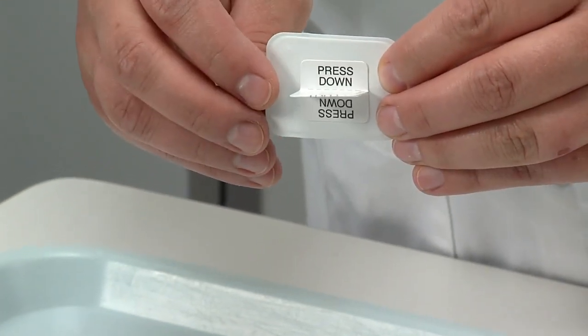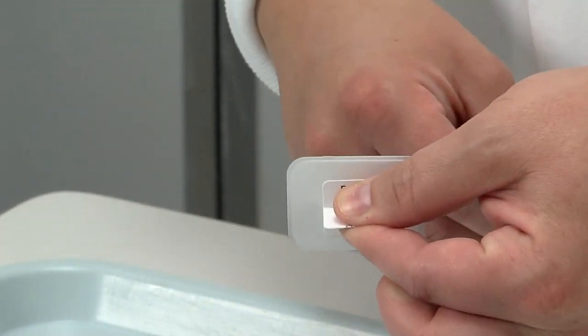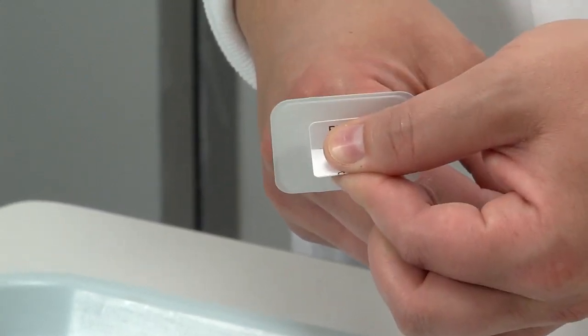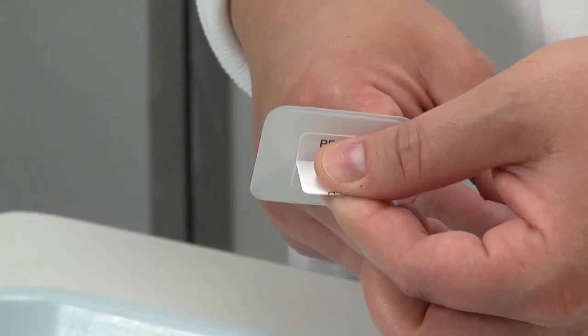That way when the patient bites down, they will actually be occluding here on the tab, and the film will be extending to get the maxillary and mandibular crown area.